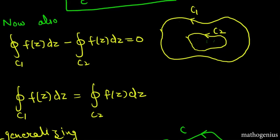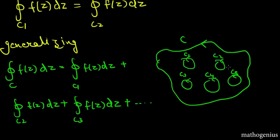We can generalize this further. If there is a closed curve C and there are any number of curves inside it, then integration along C of f(z)dz equals the sum of integrations along C1, C2, C3, and so on of f(z)dz. That is, integration along the outer curve equals the sum of integrations along all the inner curves. In multiply connected regions with curves inside curves, we change the sign and obtain this important consequence of Cauchy's theorem.